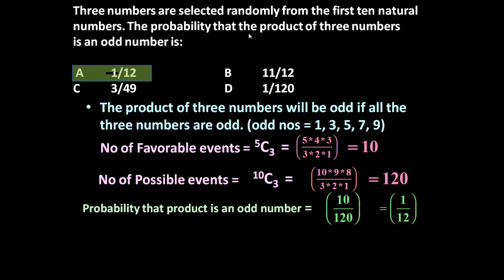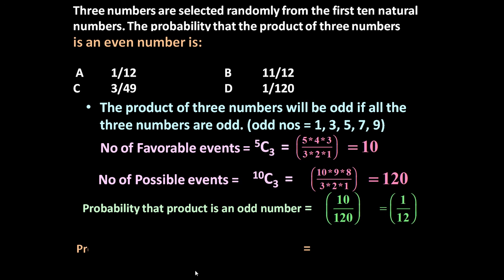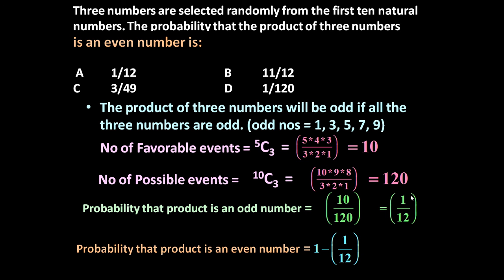Now if we slightly modify this: the probability that the product of 3 numbers is an even number. In the first 10 numbers there are 5 even numbers: 2, 4, 6, 8, and 10. Out of the 3 numbers selected, even if 1 is even, the product of 3 will be even. If 1 is odd and 2 are even, or if all 3 selected numbers are even, then also their product will be even. So to answer this question, straight away we can use: probability that product is an even number = 1 − 1/12, because 1/12 is the probability that the product will be odd. If it is not odd, it will certainly be even. Since total probability is always 1, we get 1 − 1/12 = 11/12. So the answer is B: 11/12.